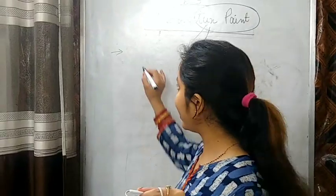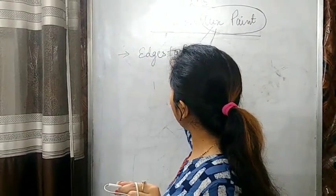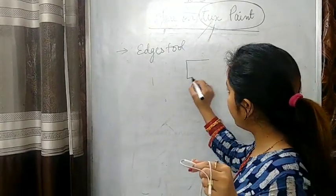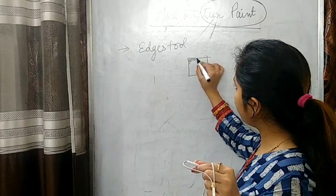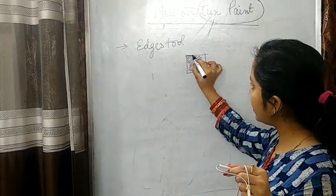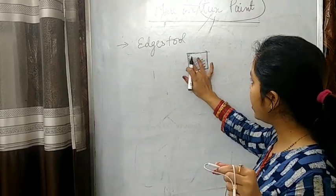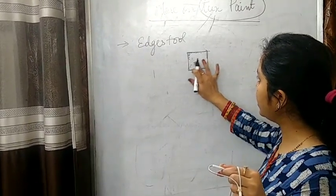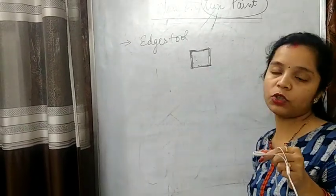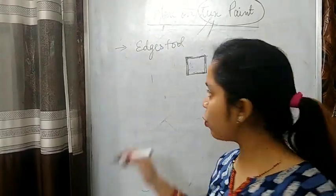Now the next tool I am going to explain is the edges tool. What is the edges tool? Suppose you have drawn any shape and you want to trace the edges — edges means outline of the shape. Then you will click on edges tool. It will remove the fill and like this the edges of that shape will be shown — the outline of that shape will be shown. That is edges tool.